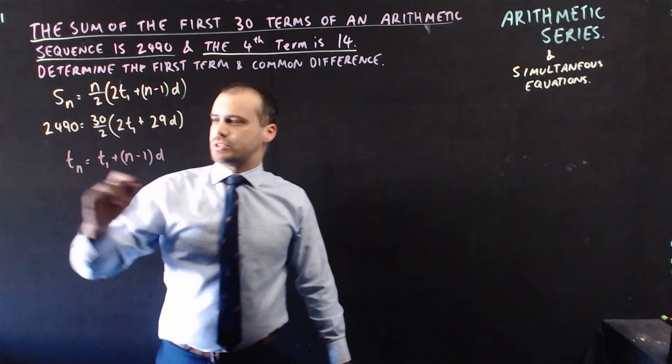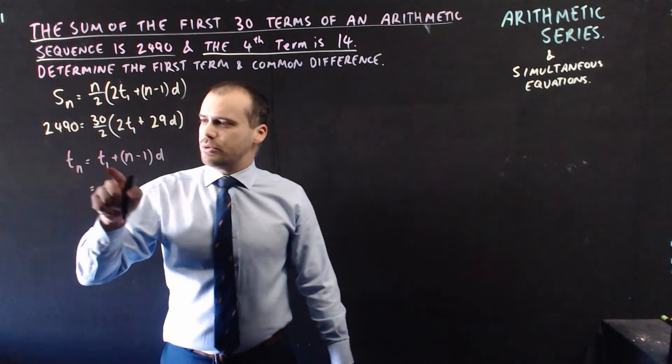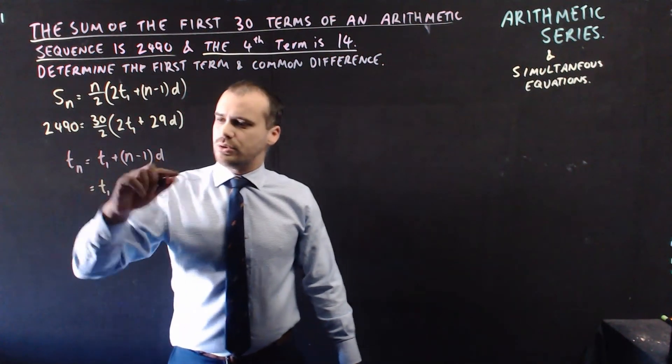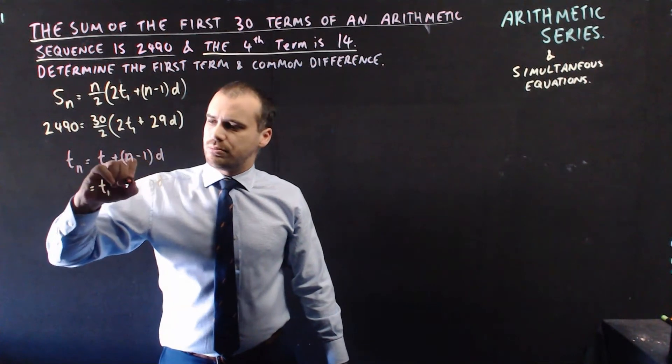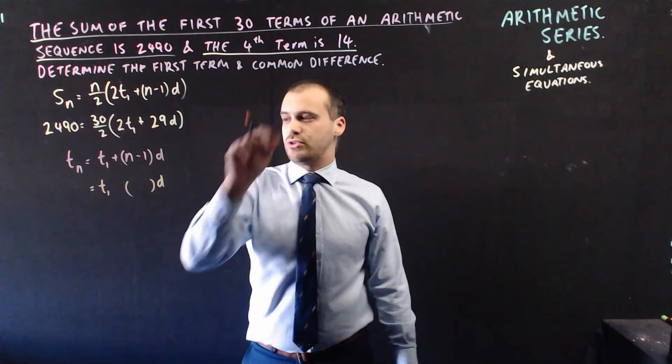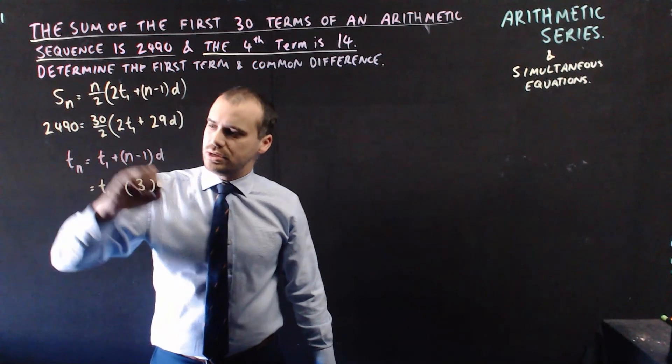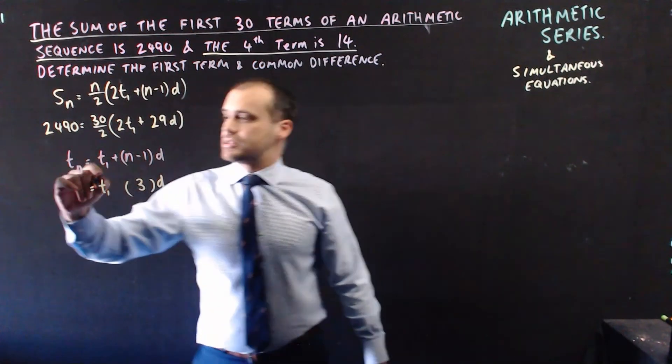So term n equals term 1 plus n minus 1 times d. It says the fourth term is 14. Okay, so we don't know what the first term is, we don't know what the common difference is, but we know that n minus 1, fourth term, so n minus 1 is 3, and we know that that term is 14.